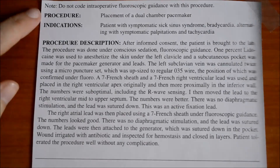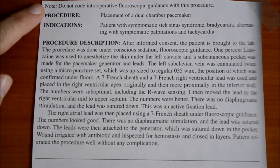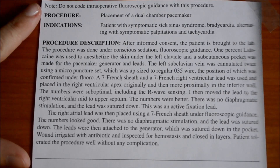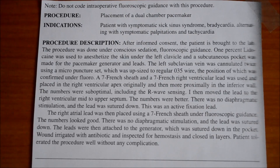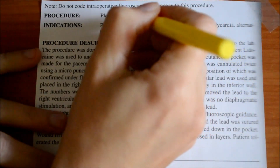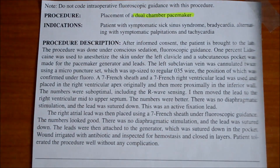As you can see at the top, the note says do not code intraoperative fluoroscopic guidance with this procedure. We are going to ignore that because this is the same example I used in a previous PCS coding video, and I will also make another video with this example of how we actually code within the book. So it says the procedure is placement of a dual chamber pacemaker. This is information we can already highlight because it's telling us what device is being inserted. The indications just give a little more information on the diagnosis — we can skip over that.